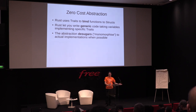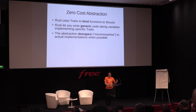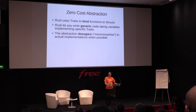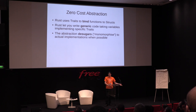Most of the time this compiles down to just the actual implementation. In Rust we use the term monomorphize — pretty much the opposite of polymorphize — so you can write your code in a generic way and get your implementation as fast as possible.